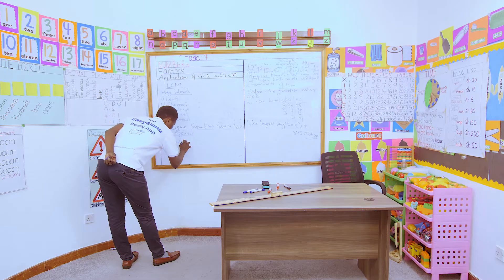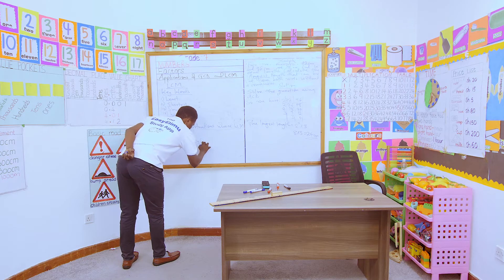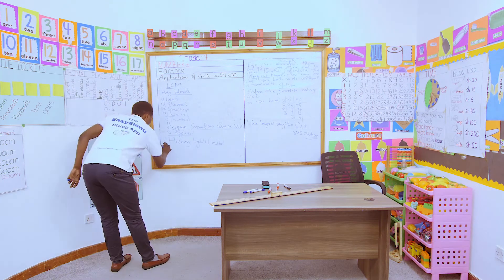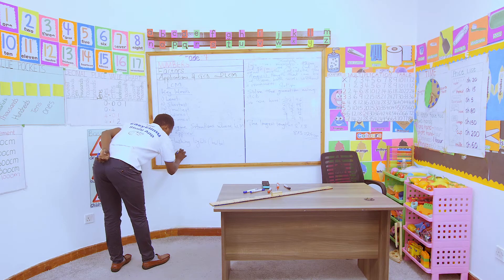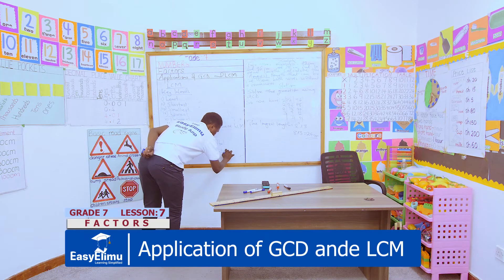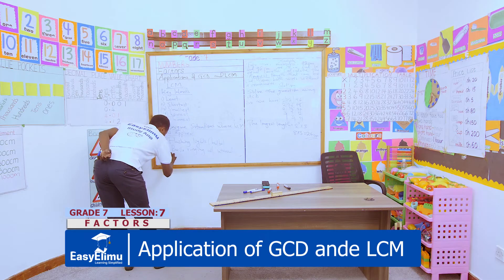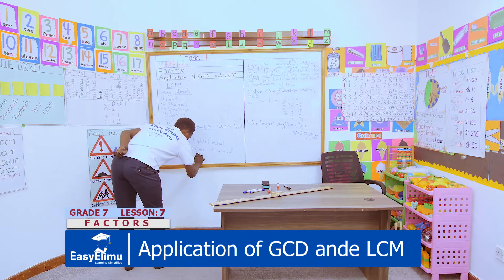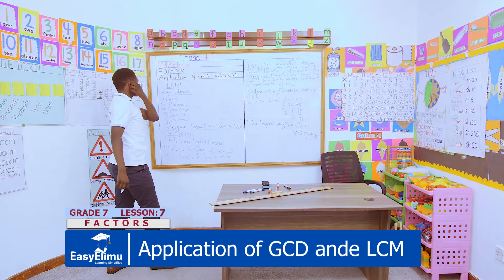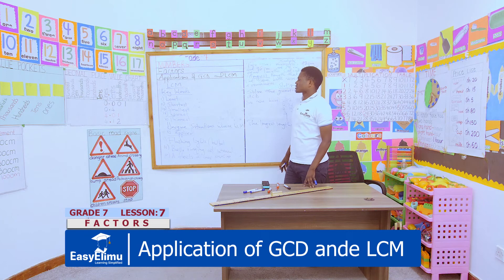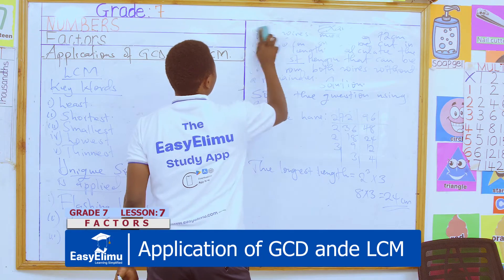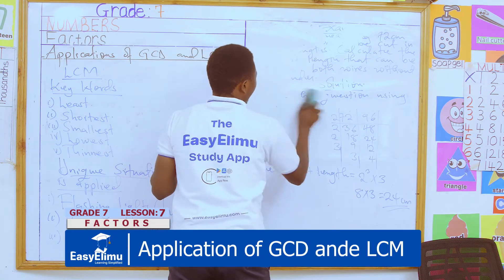Whenever you are talking about bulbs flashing, lights — in other words anything involving bulbs flashing — or bells ringing at intervals, or a fleet of cars passing, these are some of the unique scenarios where we use LCM even though we do not have the keywords to guide us. If you see those scenarios, know that you're supposed to apply LCM.